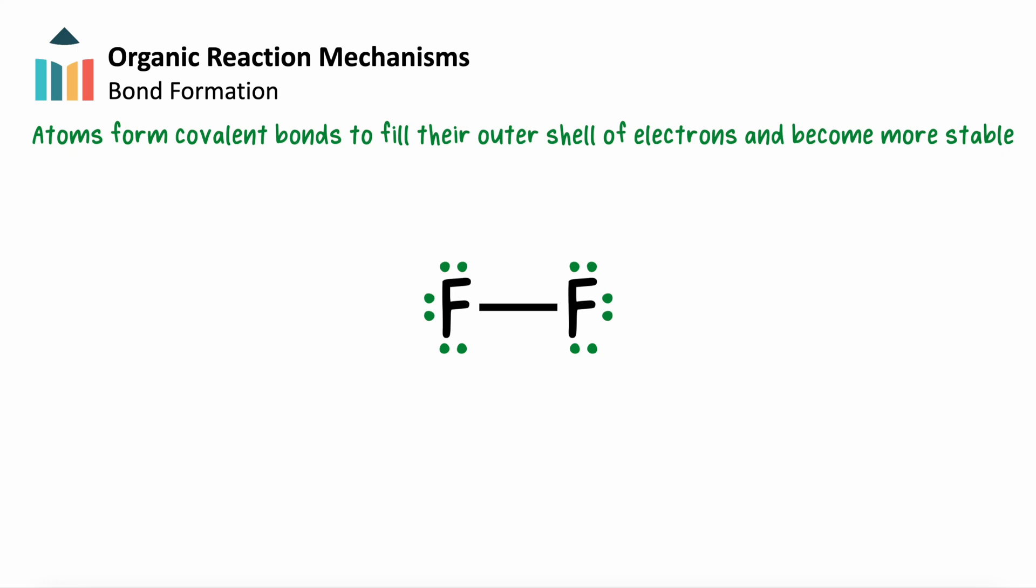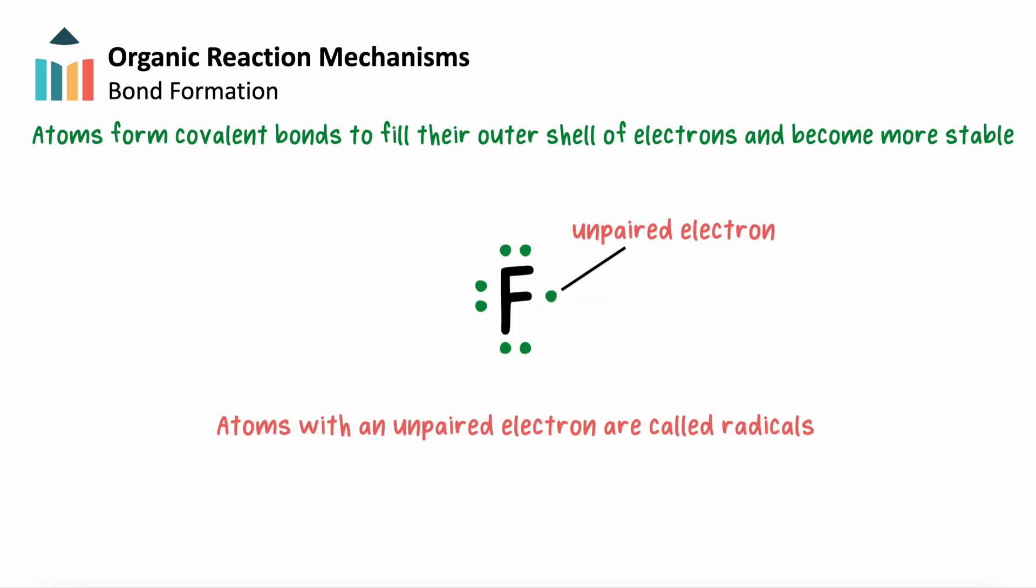Often, bonds will form from unpaired electrons from either atom. We'll call atoms like this radicals, as they're typically highly reactive and unstable. Radicals can be charged, but they're often uncharged, as is the case here.